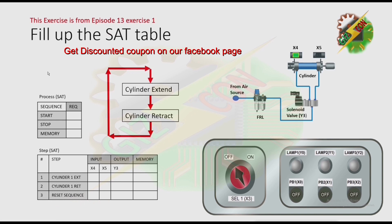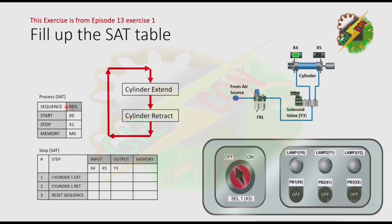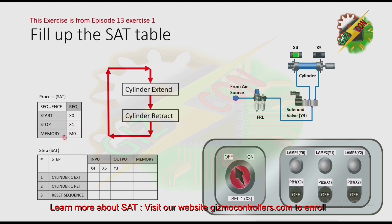Next, we need to fill up the SAC table. For example, we have x0, x1, and m0. It is stated in the exercise that the process will start if x0 is energized and the process will stop if x1 is energized. Then we just need to have a memory — you can put any memory here.